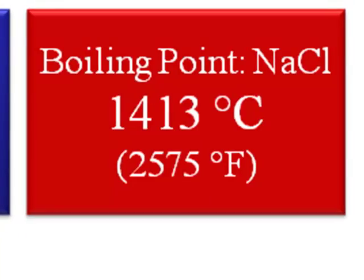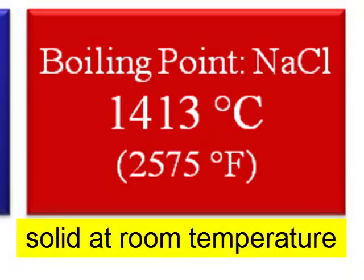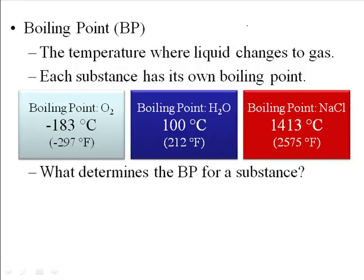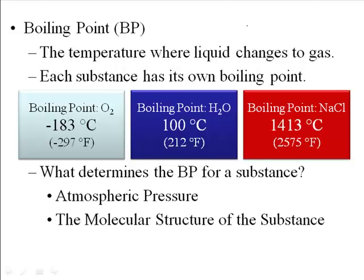Some substances have very high boiling points. Sodium chloride (table salt) must be heated over a thousand degrees Fahrenheit just to melt, and to about 2,575°F to boil. All different substances have their own boiling point. Two main factors determine it: first, the atmospheric pressure surrounding the substance; second, the substance's molecular structure, which probably has the most influence on why H2O boils at 100°C but oxygen boils at -183°C.